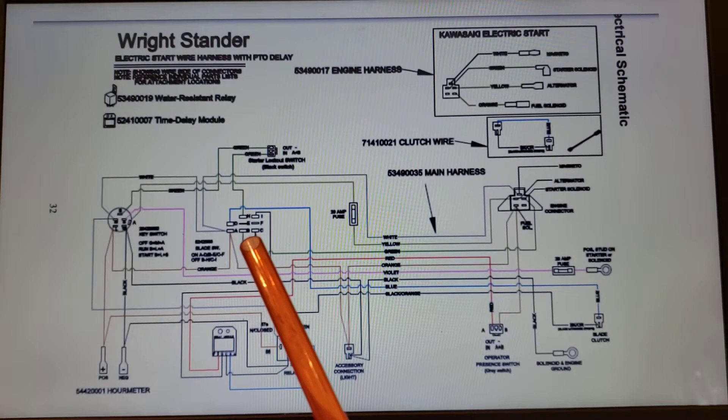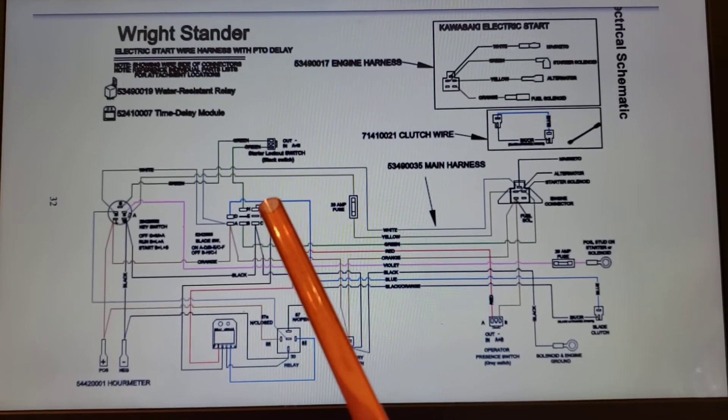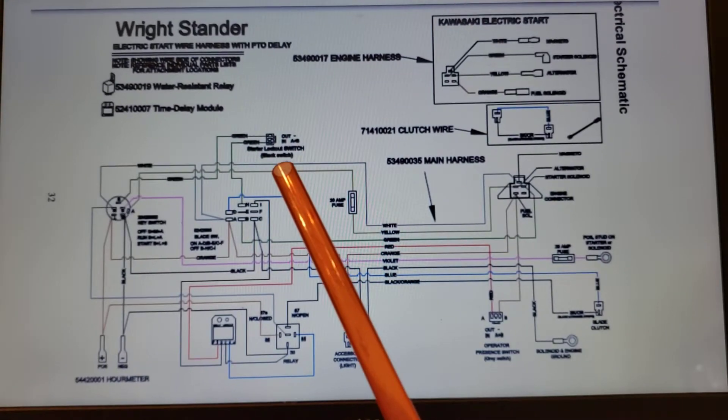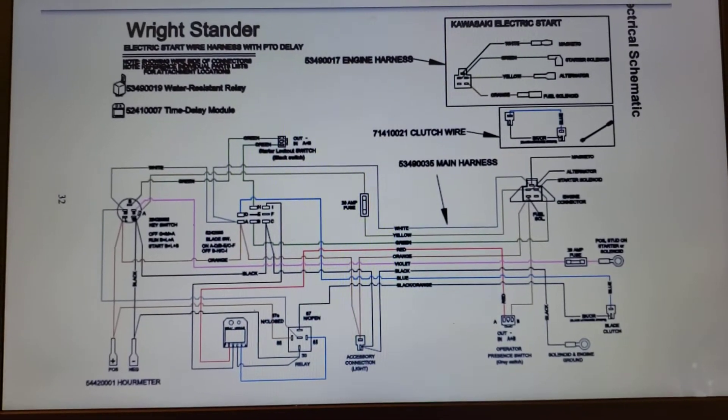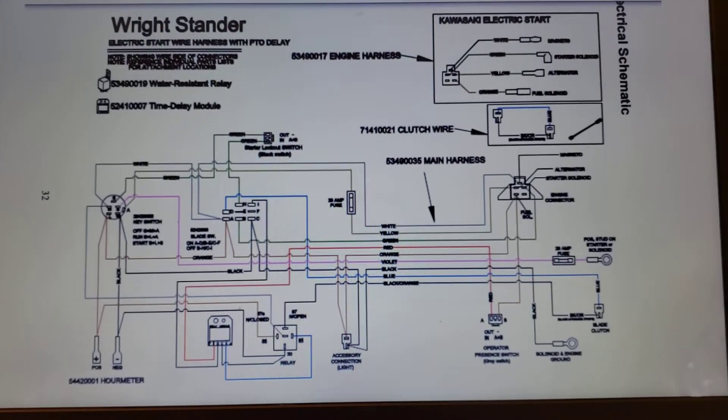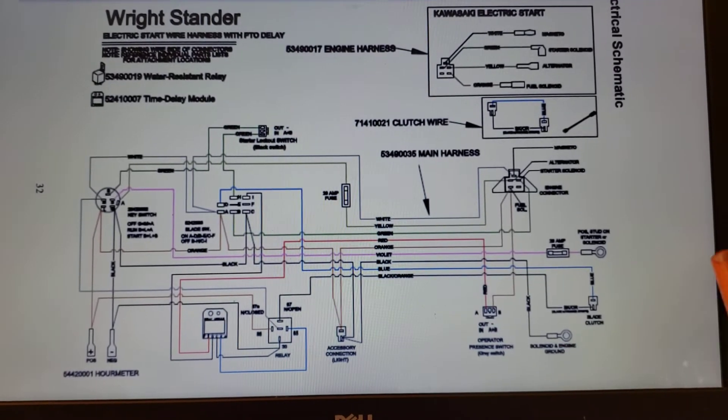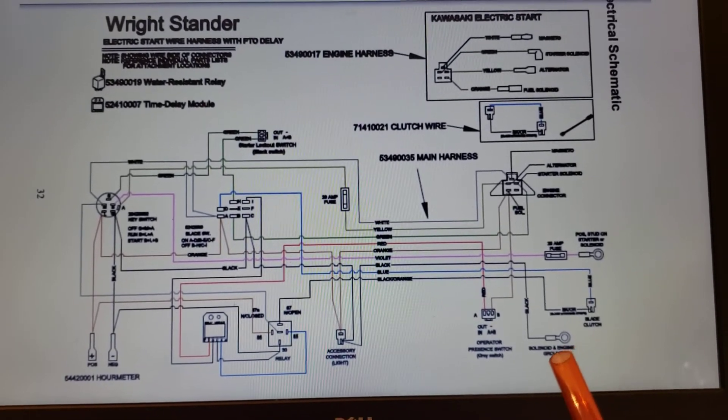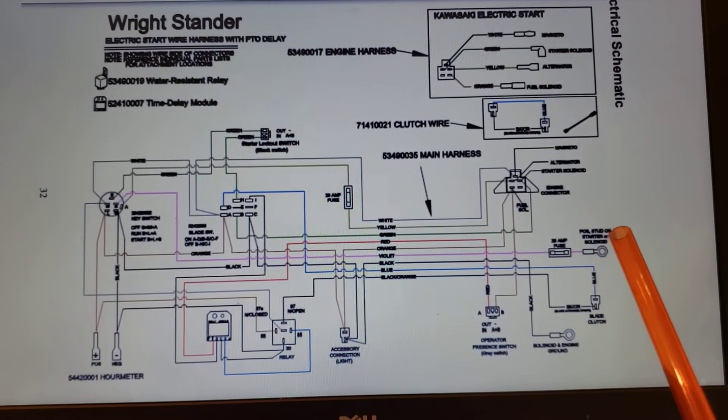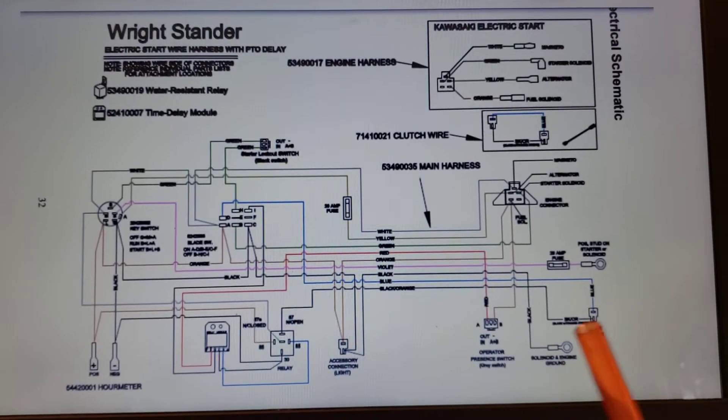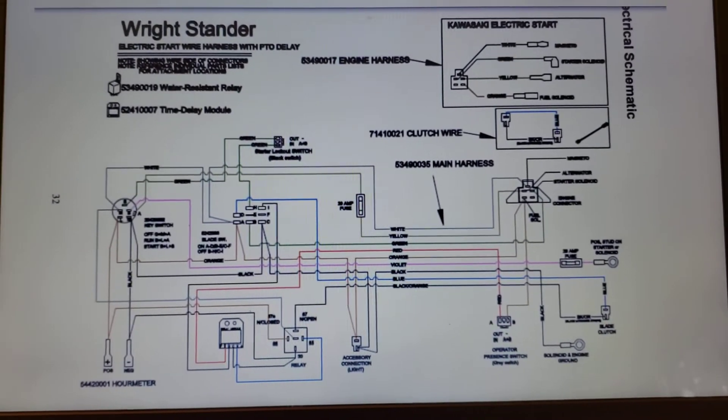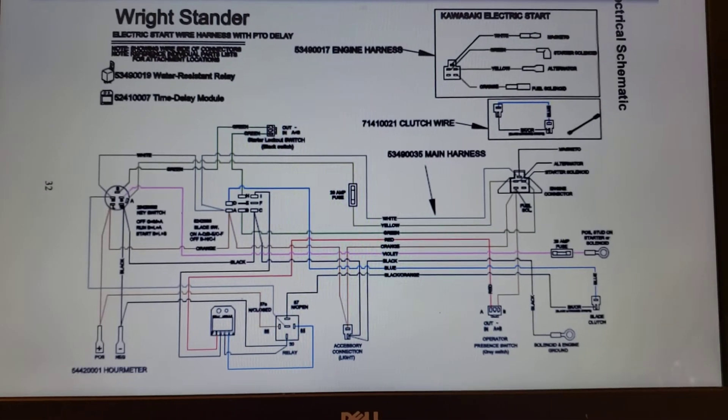Up here we have the blade switch that turns on the blade. This is the starter safety switch. I think you might have to have that in the parked position perhaps to start up the unit. Then over here we've got the negative and positive terminals of the battery connections, and then that's your clutch connection.